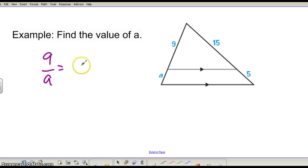So left side, upper left to lower left, is the same as 15 to 5. So cross multiply and solve that proportion. We should get A equals 3.